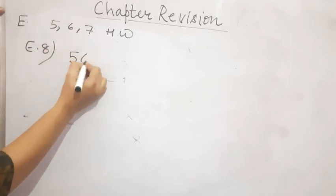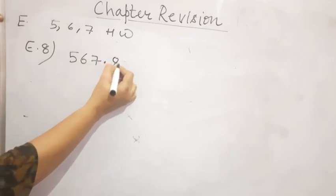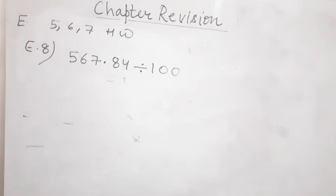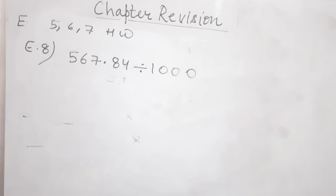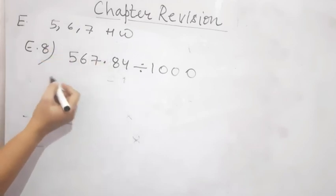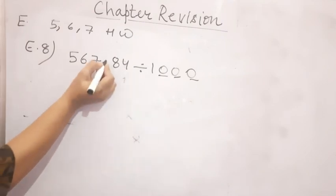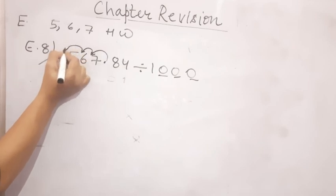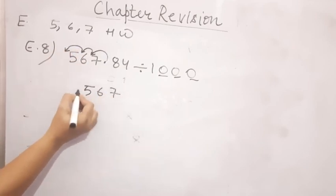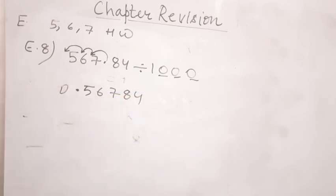Now let's move on to the last question of Exercise E, that is question number 8. I have already explained how to divide decimal numbers by 10 or multiples of 10. When multiplying, the decimal point shifts to the right; when dividing, the decimal point shifts to the left — since division is the opposite of multiplication. Count the number of zeros: 1, 2, 3 — so the decimal point shifts 3 places to the left, placing it before 5. The final answer is 0.56784.